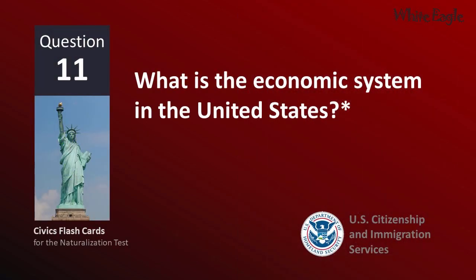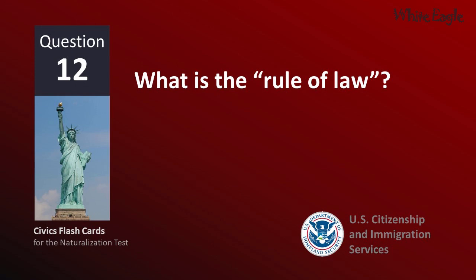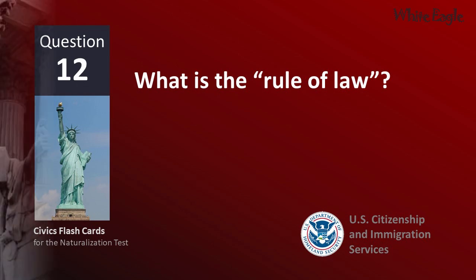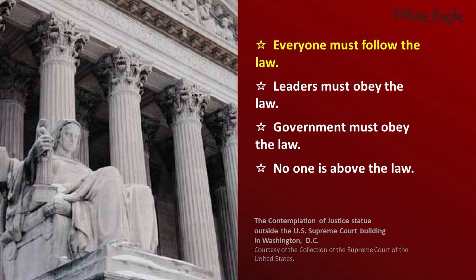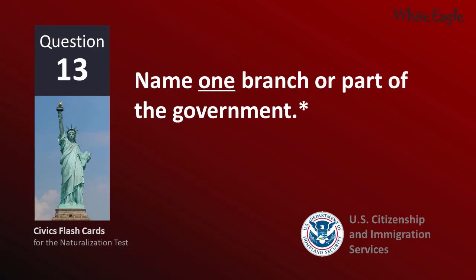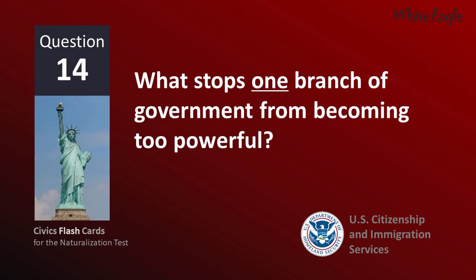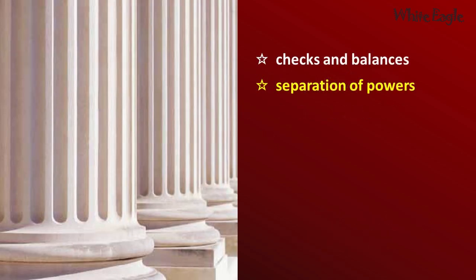What is the economic system in the United States? Market economy. What is the rule of law? Everyone must follow the law. Name one branch or part of the government. President. What stops one branch of government from becoming too powerful? Separation of powers.